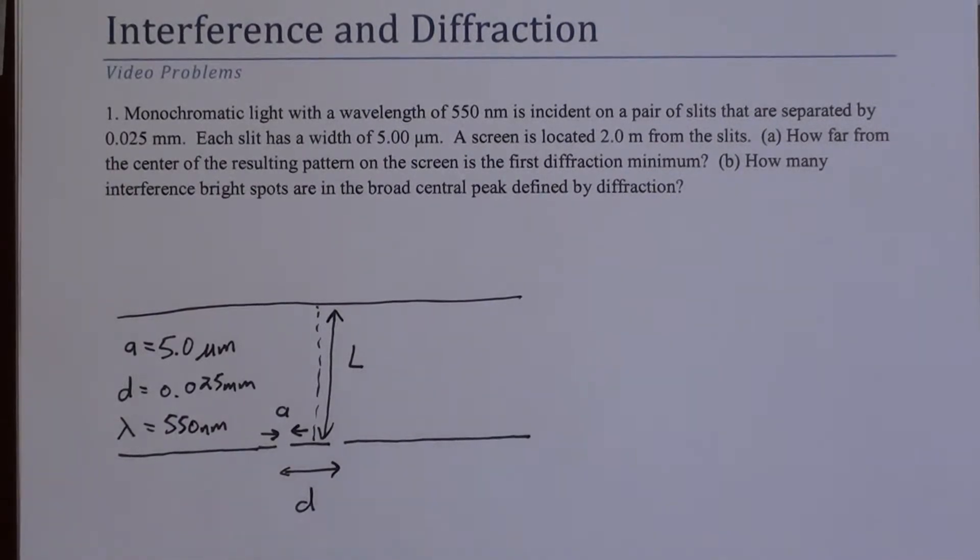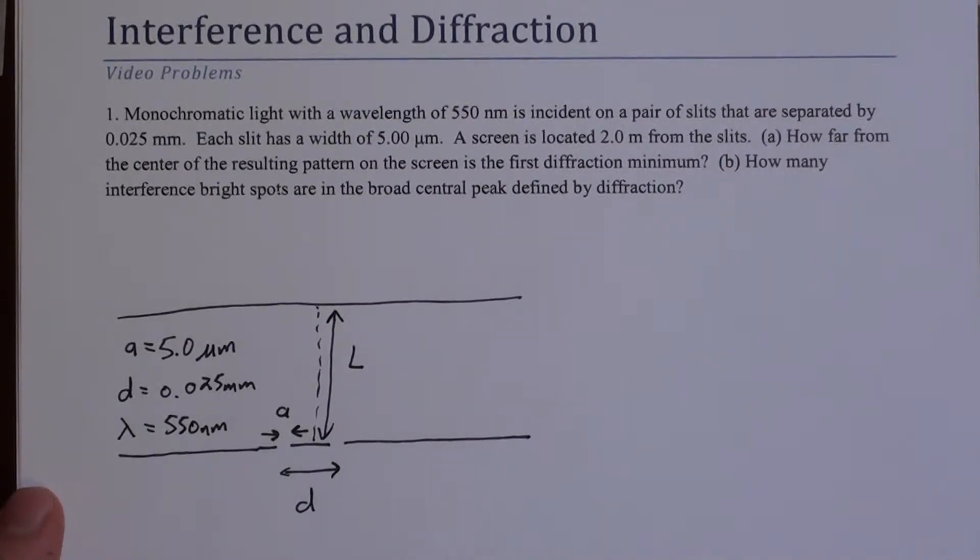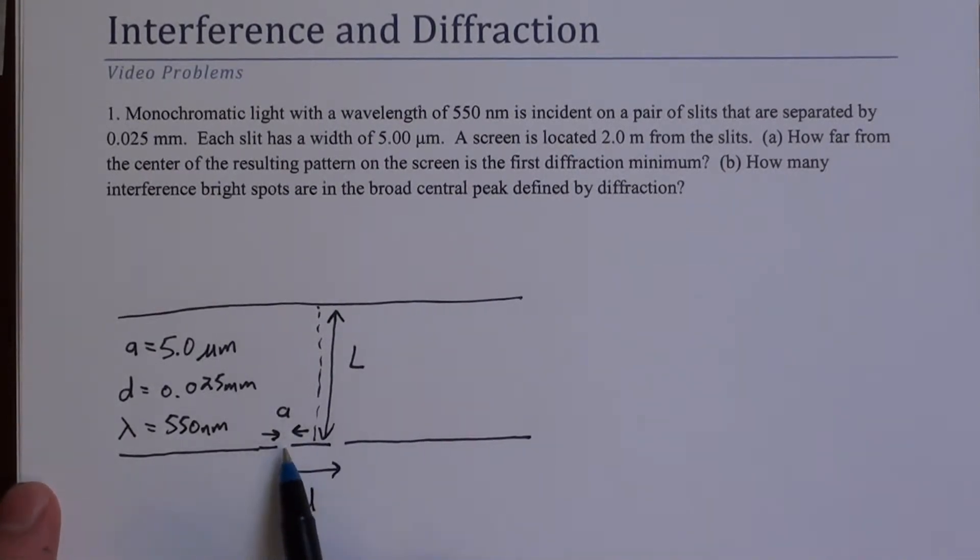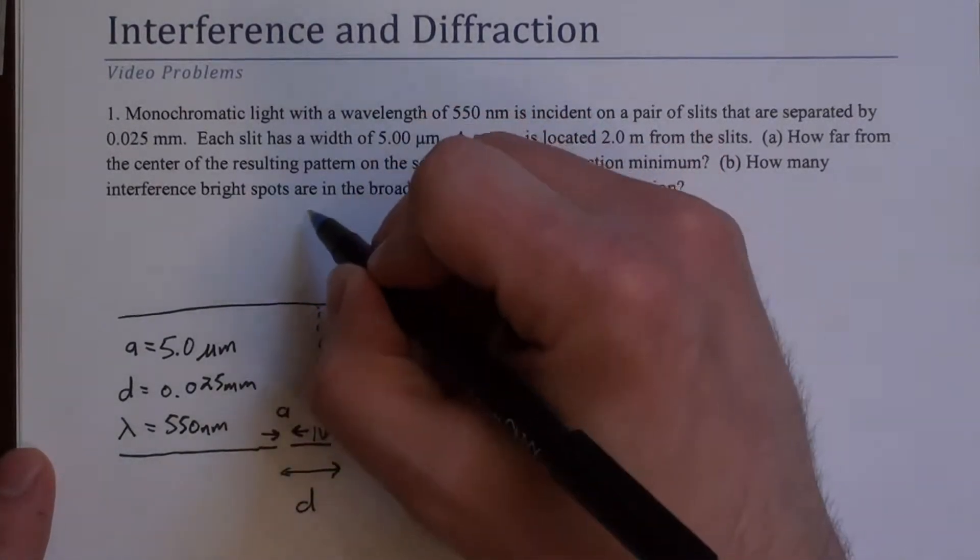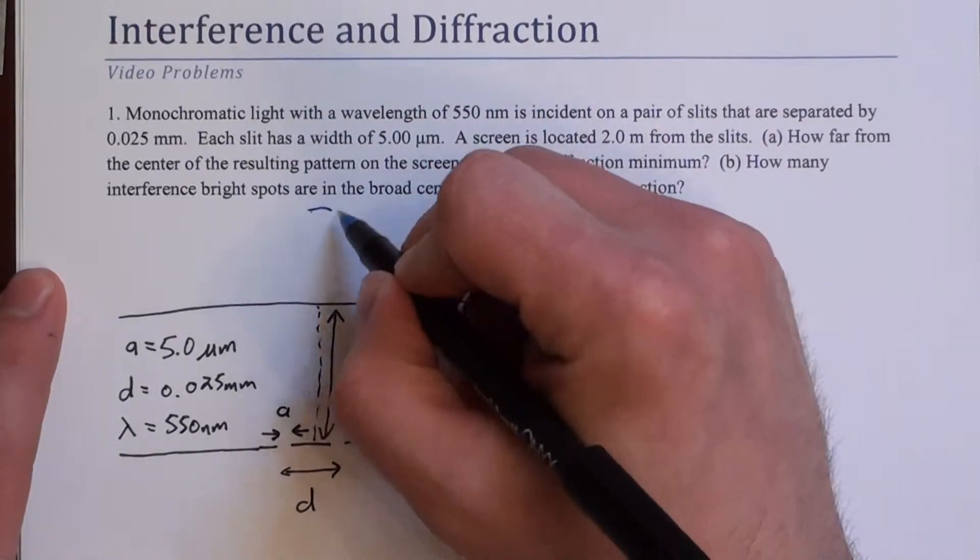In general, what we get here will be both interference and diffraction. Diffraction from the individual slits themselves, and interference from light going between both slits. Generally that looks like this.